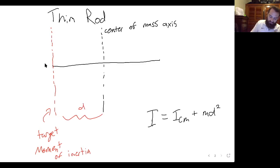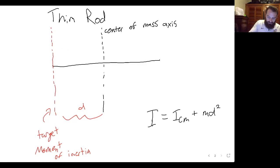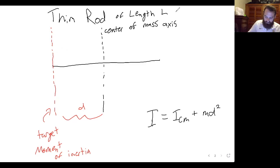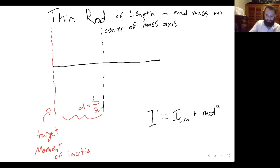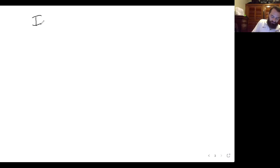We'll say this rod has a total length of L and mass m. So d, the distance between the two axes, would be L over 2. First, I'm going to calculate the center of mass moment of inertia, and then we'll add the md² term, where d is L over 2.